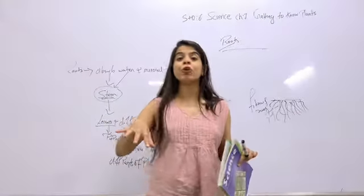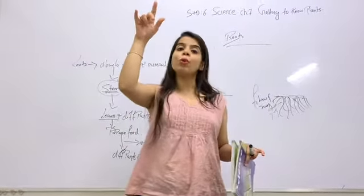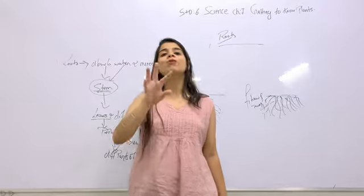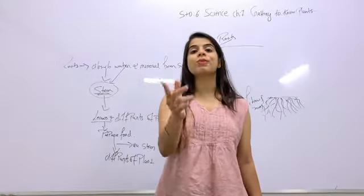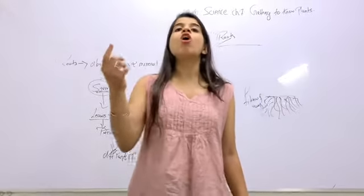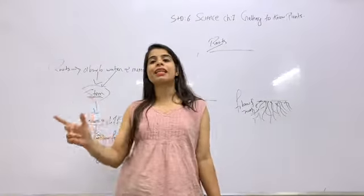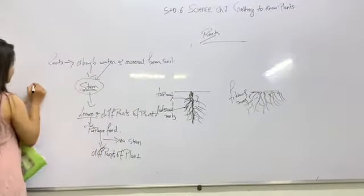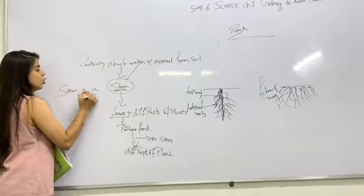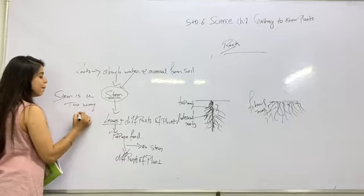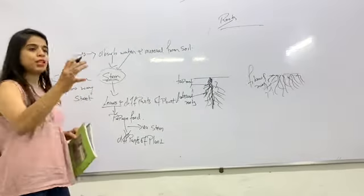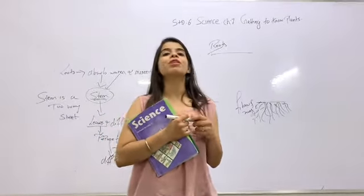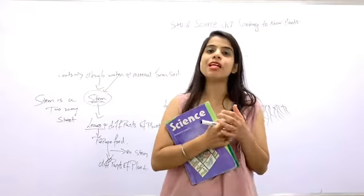The stem is called a two-way street. First, water and minerals travel upward from roots through the stem. Then the food prepared in the leaves travels downward through the stem to different parts of the plant. So the stem is called a two-way street because water moves from roots to leaves, and food moves from leaves to different parts of the plant.